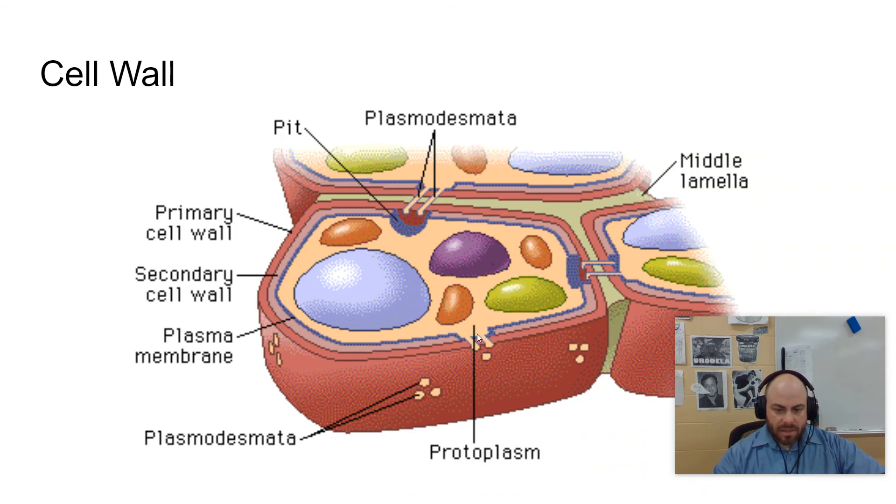Plants still have a cell membrane also. So there's still that permeability happening. But the cell wall gives some extra added permeability as well.